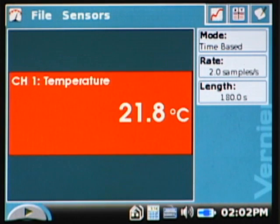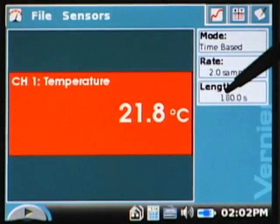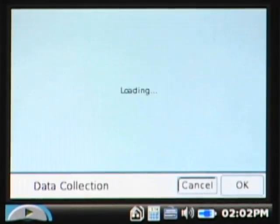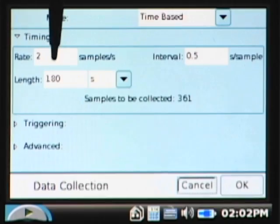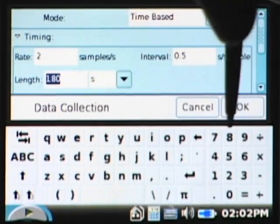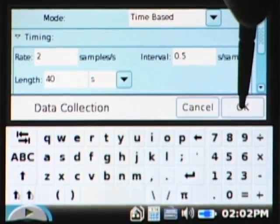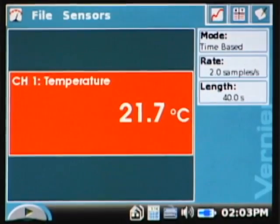In the lab, it doesn't want us to use that long of time, so we need to change that to 40 seconds. It's very easy to do. I just come down and tap on length, and I can change my experiment length. Instead of 180, I want 40 seconds. I say okay, and now my experimental length is 40 seconds.